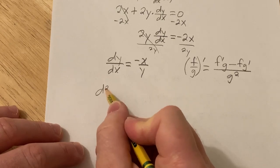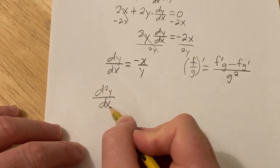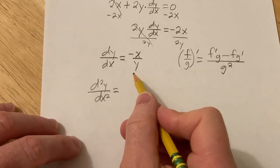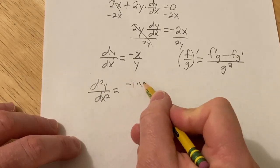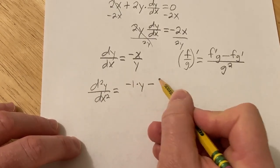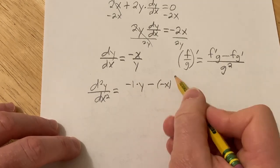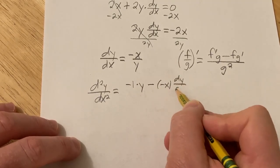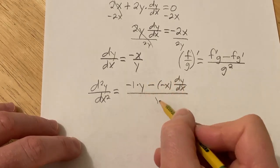So in this case, the derivative, which is the second derivative, is going to be the derivative of the top, which is negative 1 times the bottom minus the top times the derivative of the bottom, which is dy/dx, all over the bottom one squared.